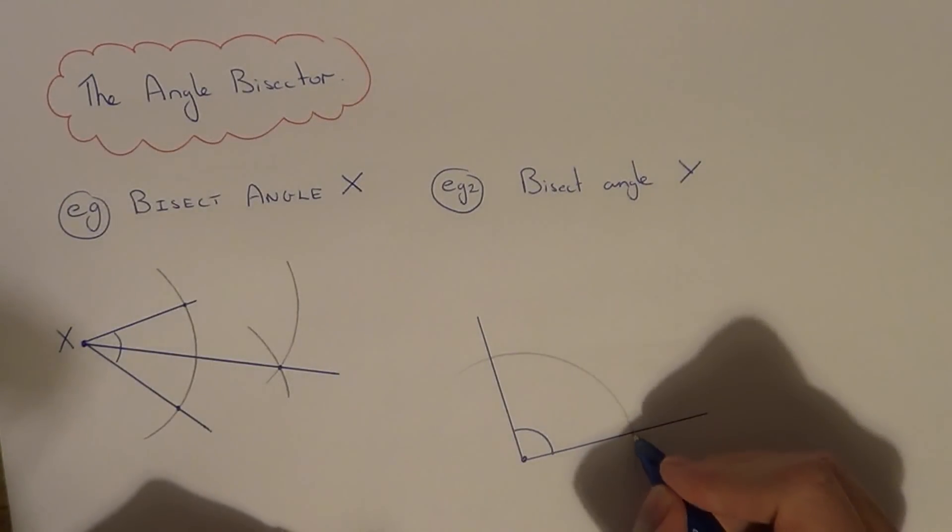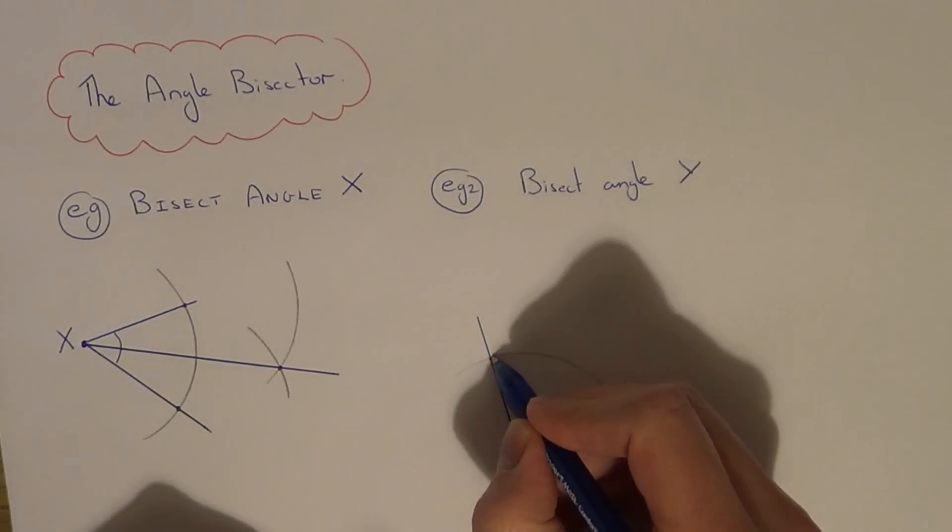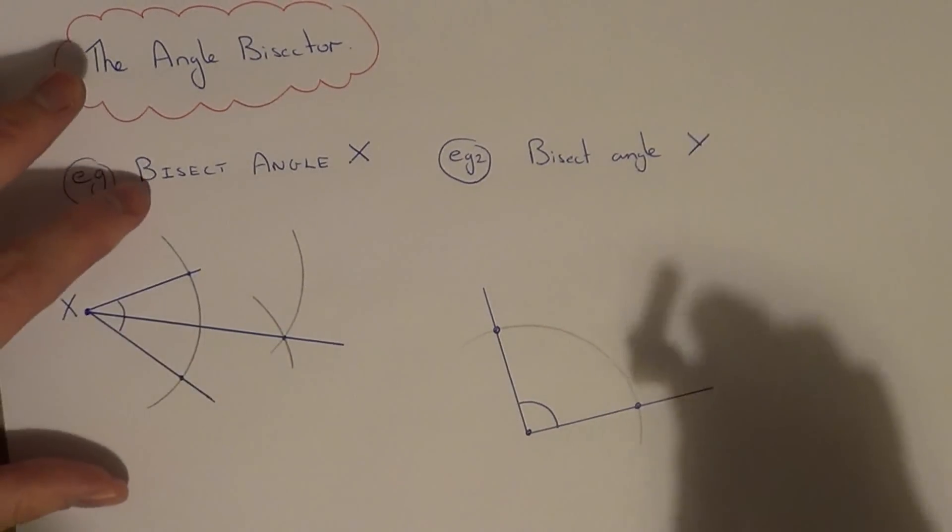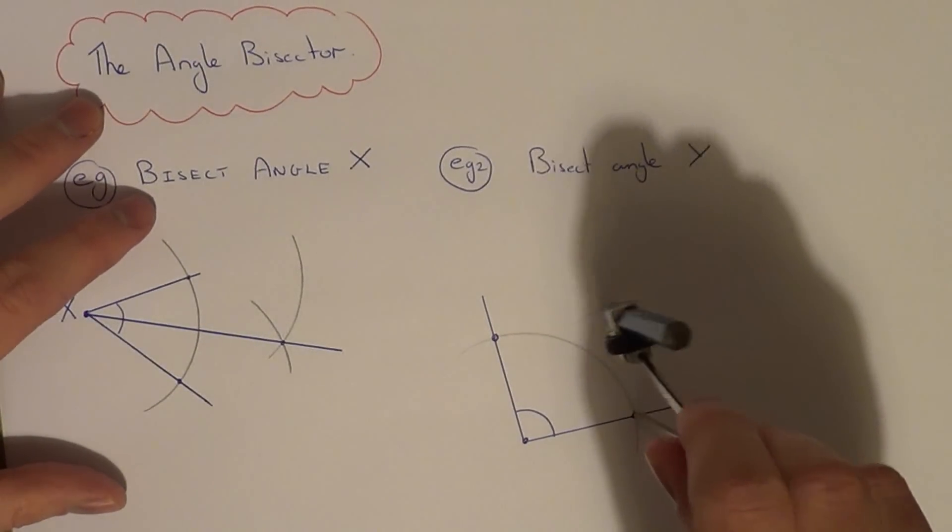Next, move your compass to the two new intersection points and do another two arcs from these two new points.